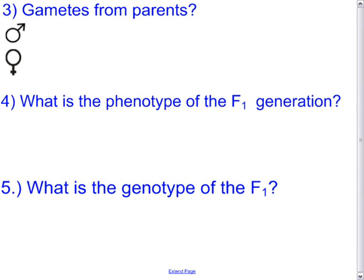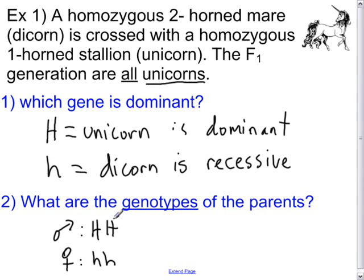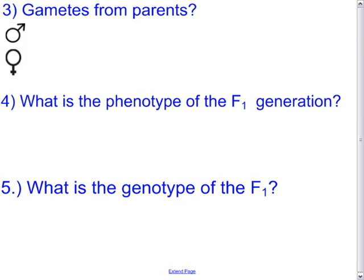Three more questions: What are the gametes from the parents? What is the phenotype of the F1 generation? And what is the genotype of the F1 generation? The male can only produce dominant alleles for the gametes; the female can only produce recessive alleles. So the female's gametes will only carry one lowercase h.